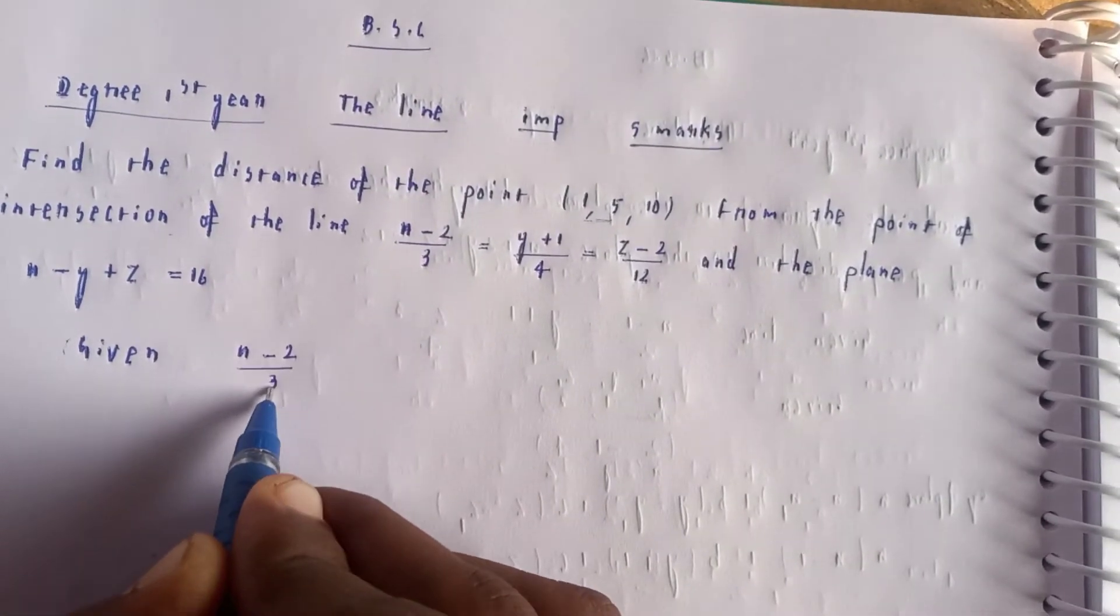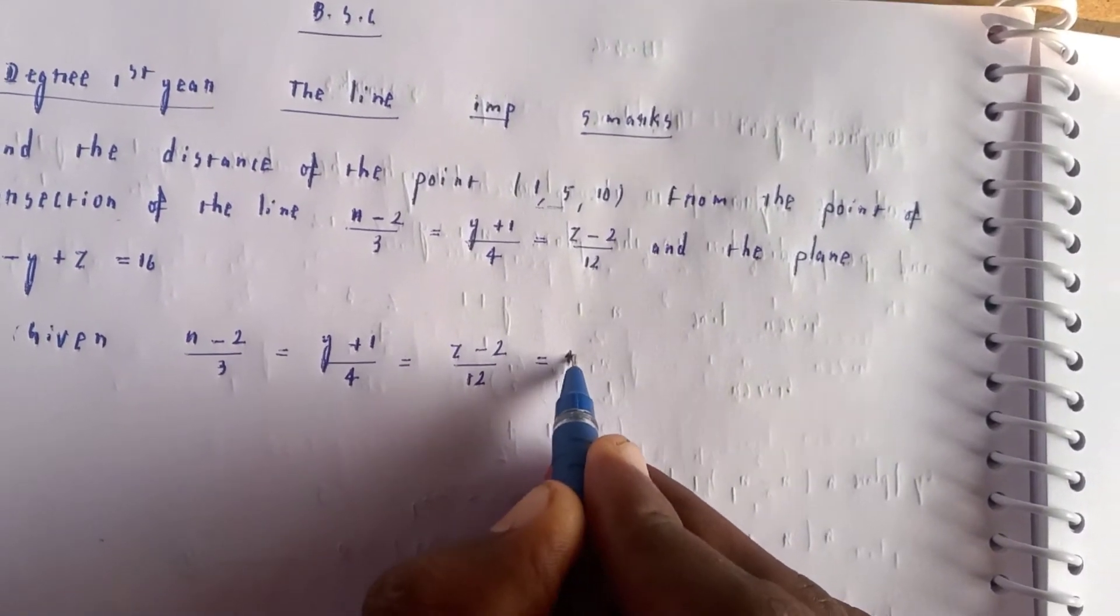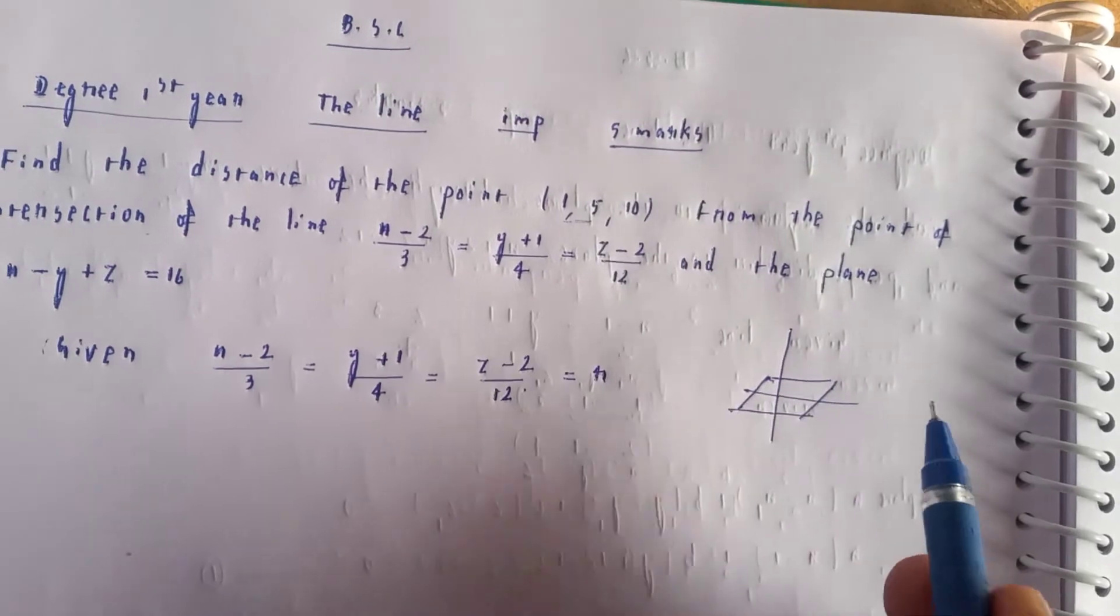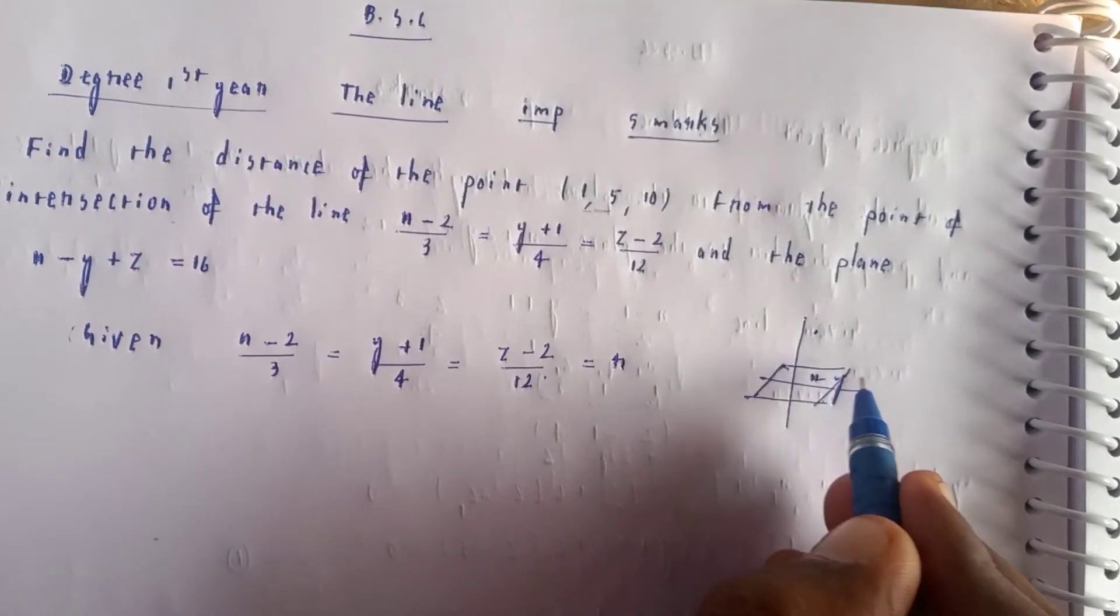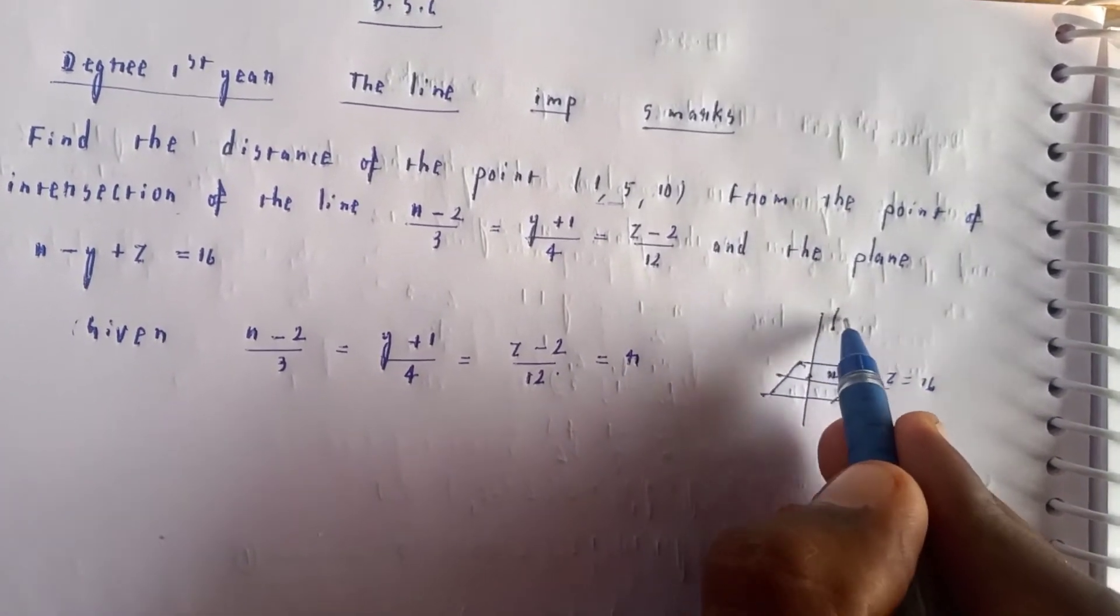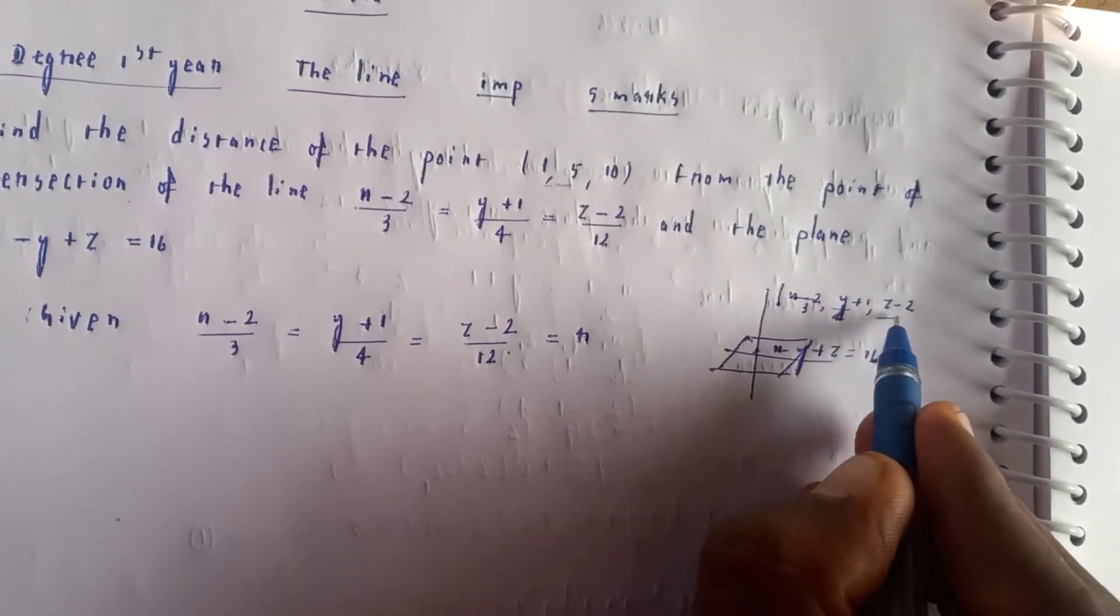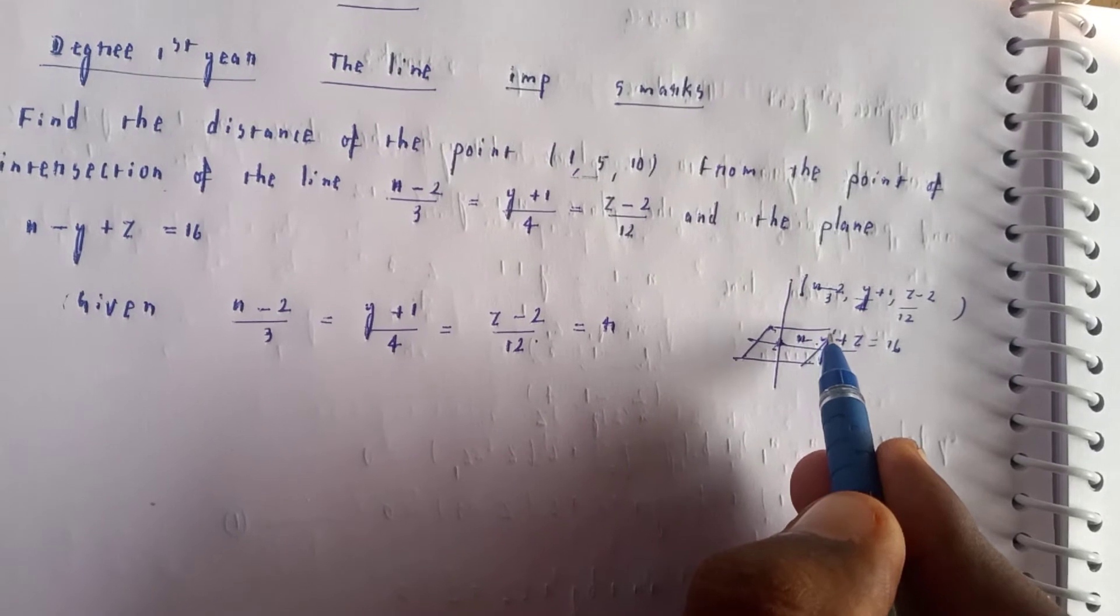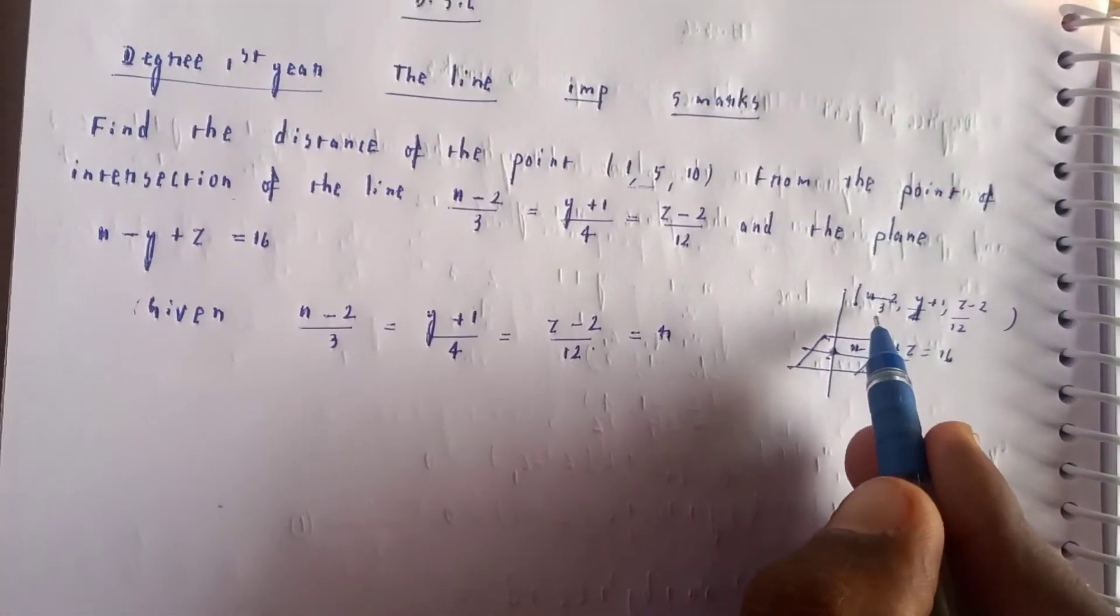We have (x-2)/3 = (y+1)/4 = (z-2)/12 equals some parameter. To find the intersection point, we need to substitute the point from the line equation into the plane equation. By substituting, we can find the intersection point.